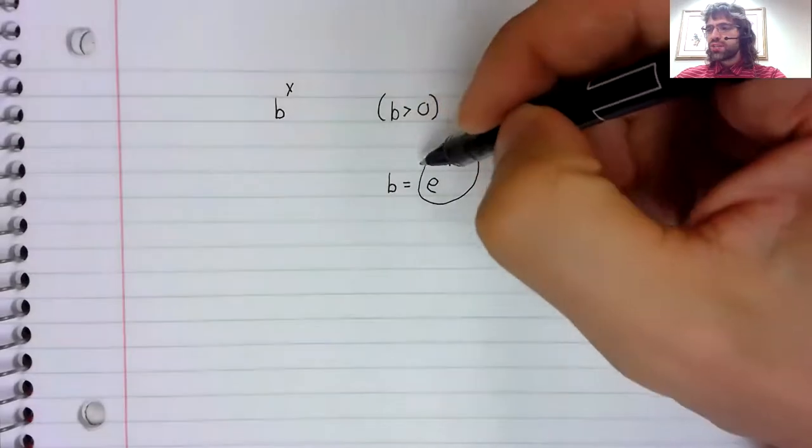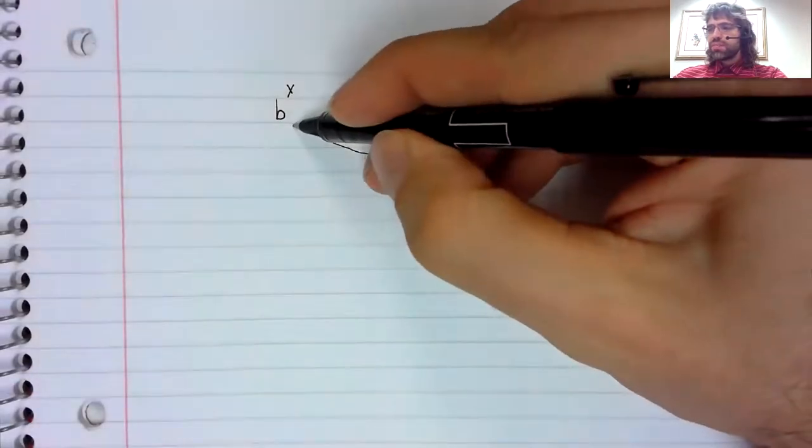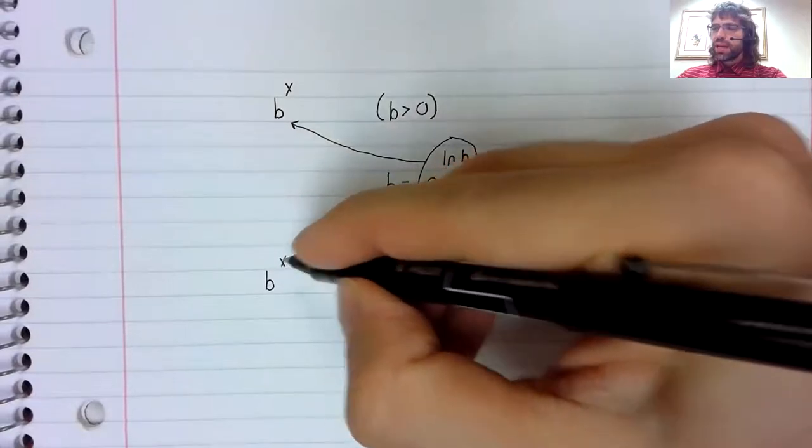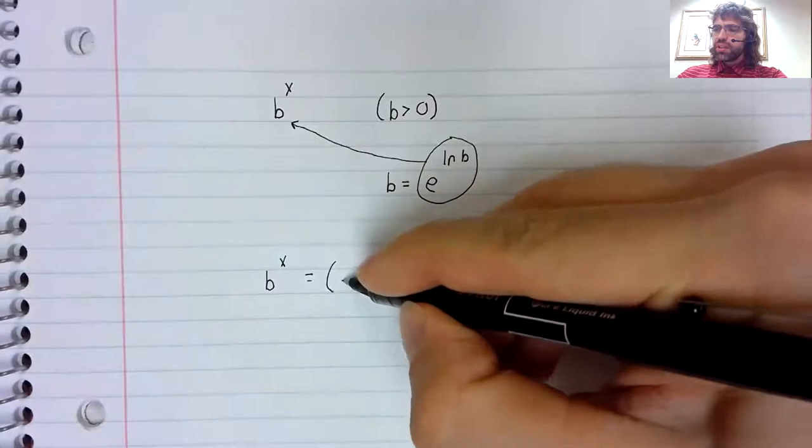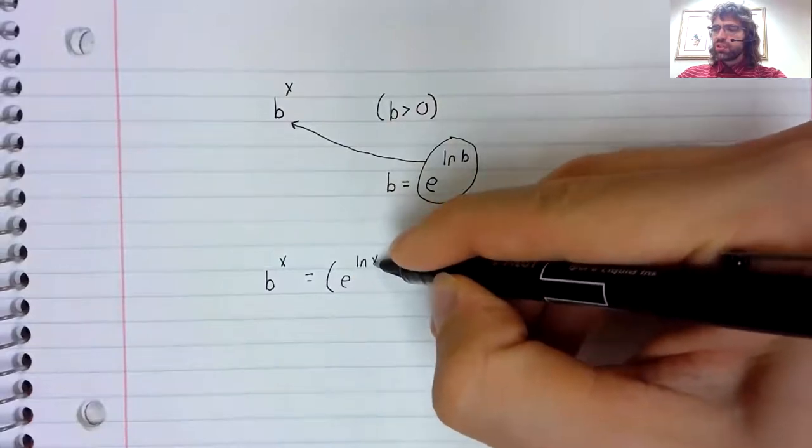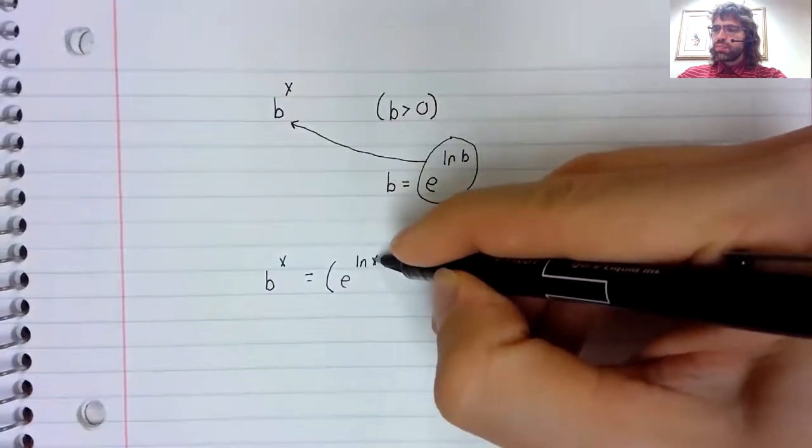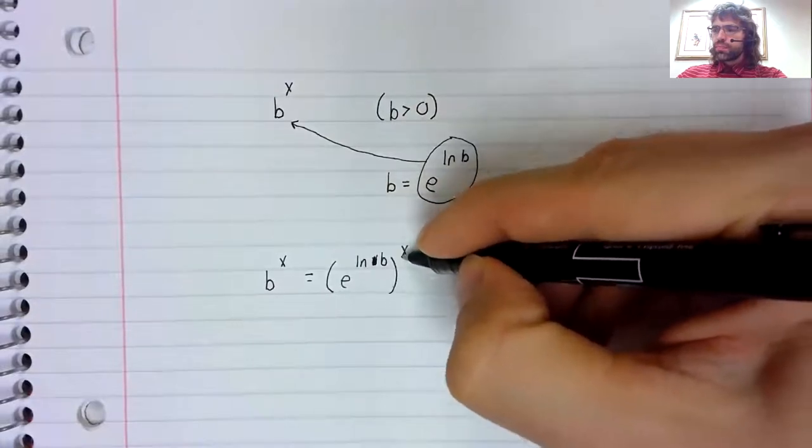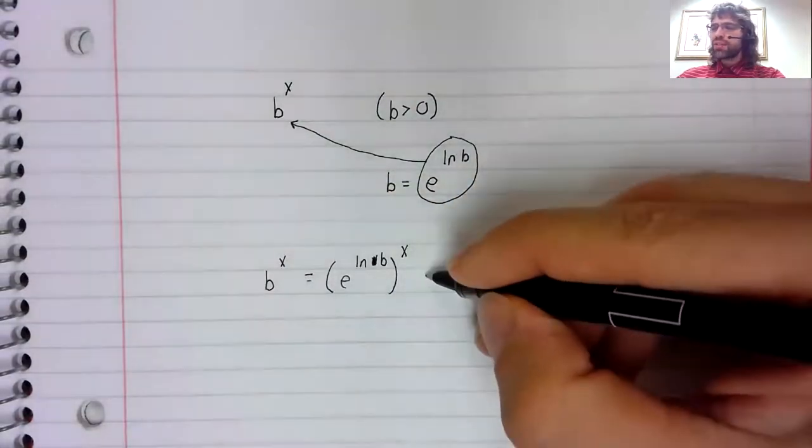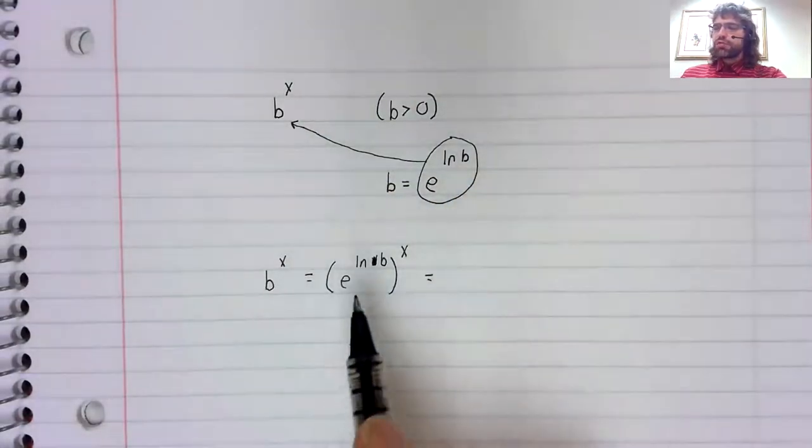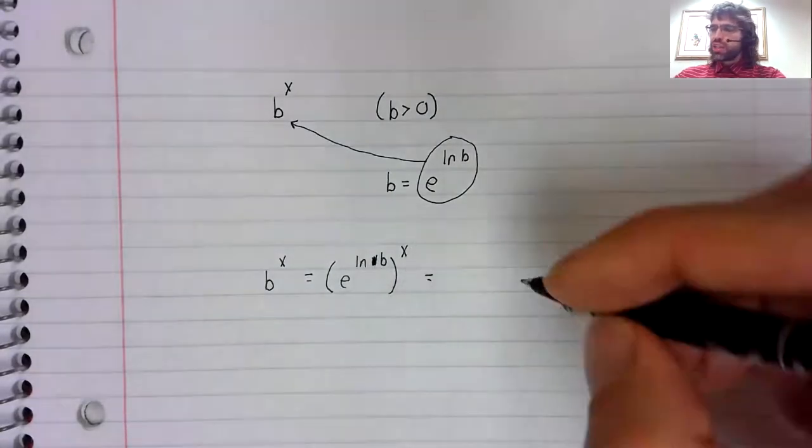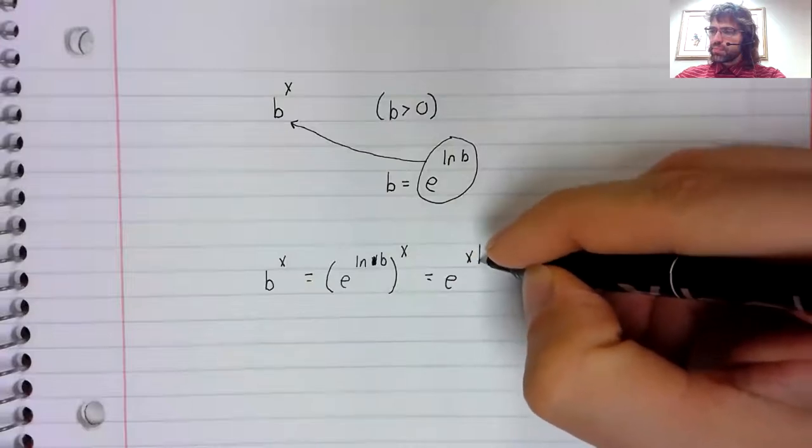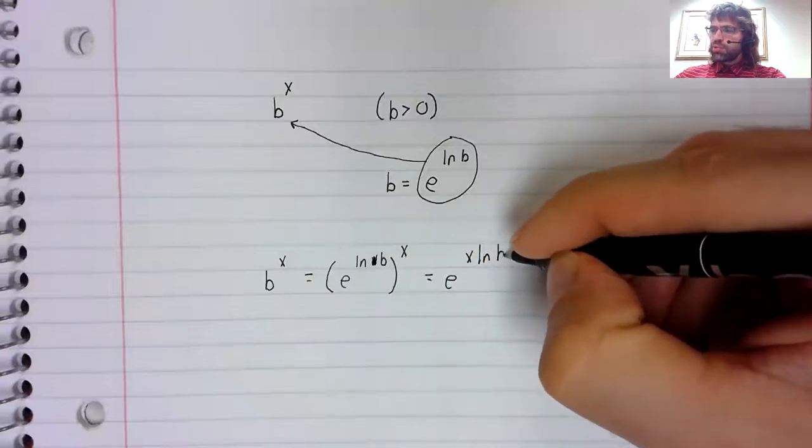Let's take that and let's plug it in. b to the power of x is this exponential raised to the power of x. This repeated exponentiation multiplies the powers together.